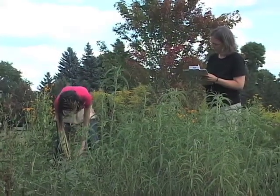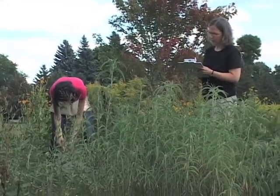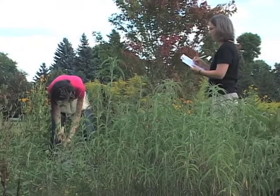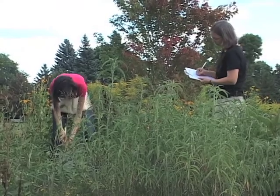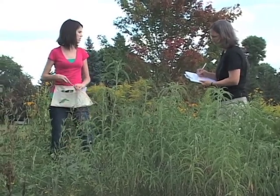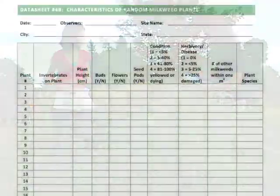Once we finish measuring monarch density, we randomly choose 30 plants and assess their condition using datasheet 4B, Characteristics of Random Milkweed Plants.